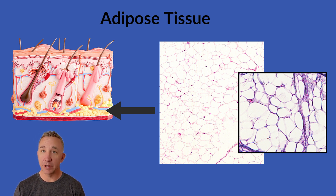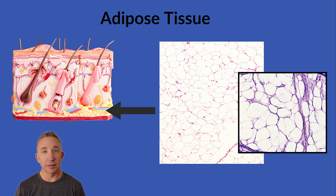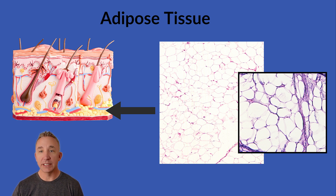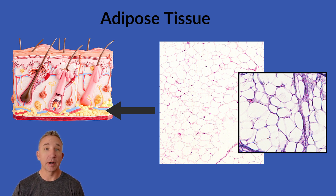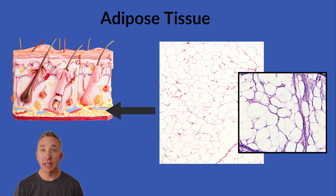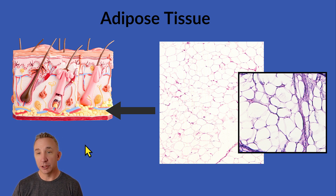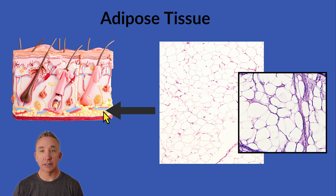Previously in another video, we looked at areolar connective tissue. Now we're looking at adipose tissue, which is our fat supply — the adipose tissue we see in the hypodermis, around our breasts, around our kidneys to provide structural cushion, insulation, and energy supply. Where I show it at the beginning, it's part of the hypodermis.